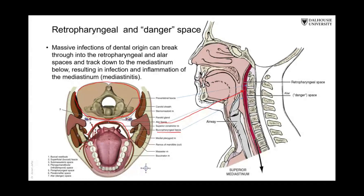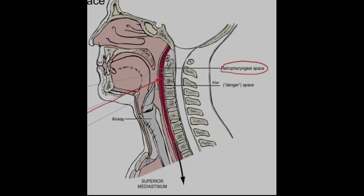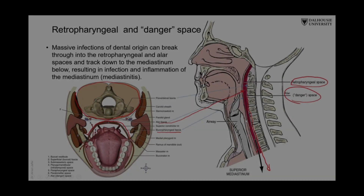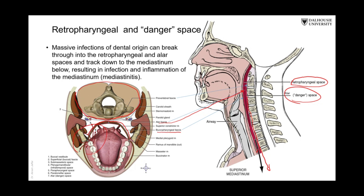Sometimes the pre-vertebral fascia splits into another layer called the alar fascia. It depends whether the pus is located in the retropharyngeal space — in that case it will descend to the lower part of the neck and upper part of the mediastinum. But if it is located behind the alar fascia, that is the dangerous space, and the pus will descend directly down to the superior and then inferior mediastinum, reaching as far as the level of the diaphragm.